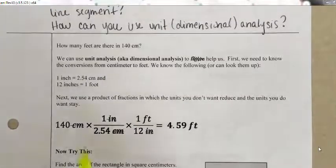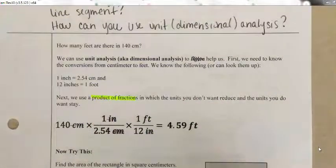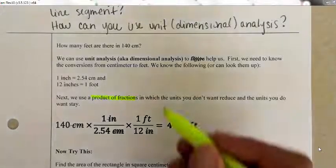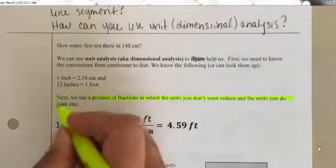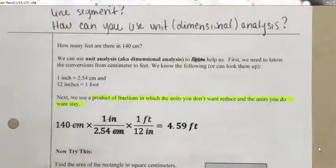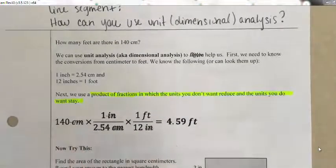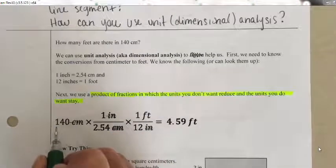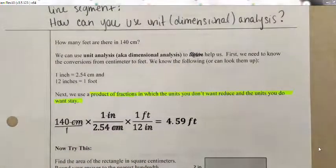Here's what you do. You use a product — meaning multiplication — of fractions, in which the units you don't want reduce and the units you do want stay. In this example, I originally had 140 centimeters. You can think of that as 140 centimeters over 1, because we can write every number as a fraction.